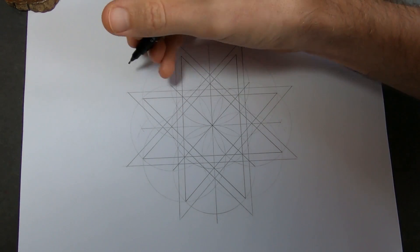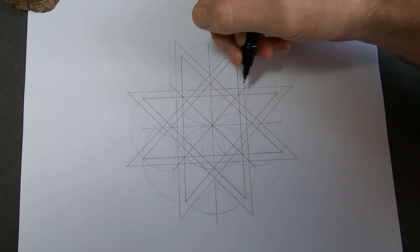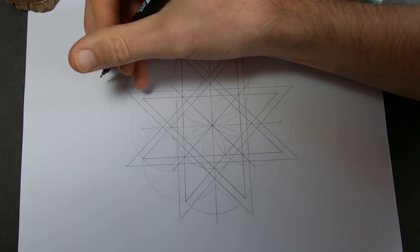Alright, so the first one is going to be overlapping. It's going to go over and then under. It's always over under, obviously. Over, under, over, under. Alright, let's do this.